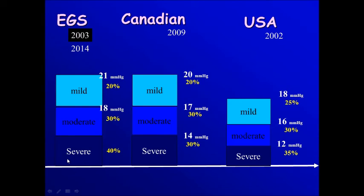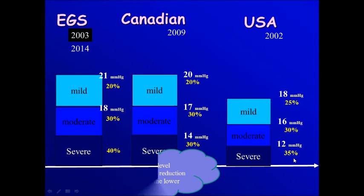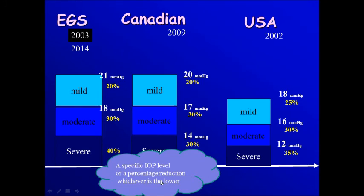In case of severe glaucoma, the limit here is 40 percent, here it is 30 percent or 14 millimeters mercury, and here it is 12 millimeters mercury or 35 percent reduction. So we have either a percentage or a level, and you choose whichever is lower.